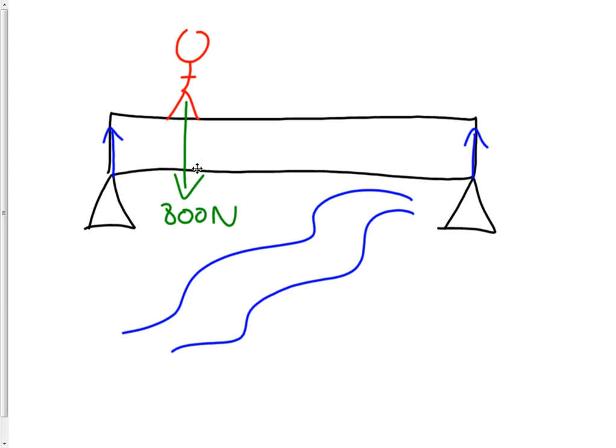So, what are the upwards forces on the bridge going to be when the person is on the bridge? Well, we need to know a couple of minor details like how big the bridge is and where the person is. So, let's say the whole bridge is five meters long. And let's say the person is one meter from the end or something.